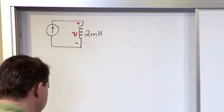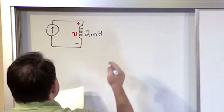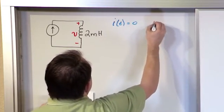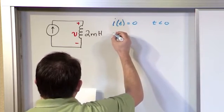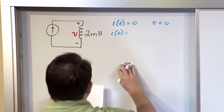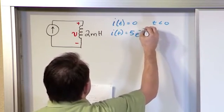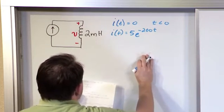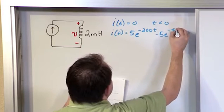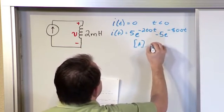So this is given to you in the problem. Also given to you is the value of this current. So the current is 0 for t less than 0 and the current is the following expression: 5e to the minus 200t minus 5e to the minus 800t and this is of course in amps and this is for t greater than 0.